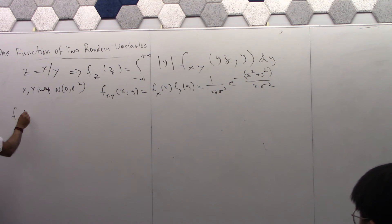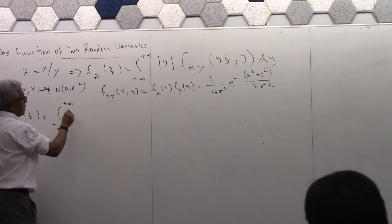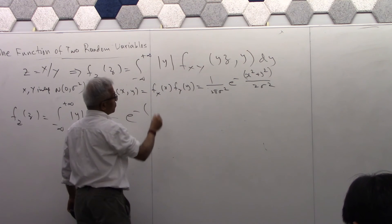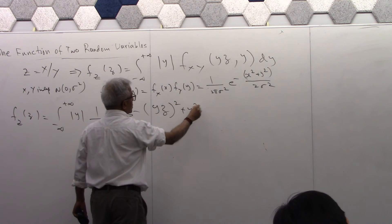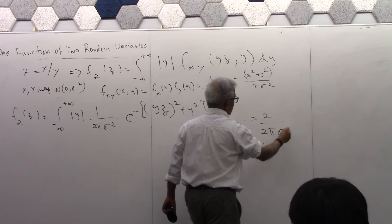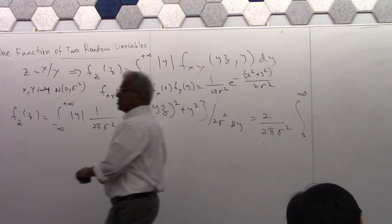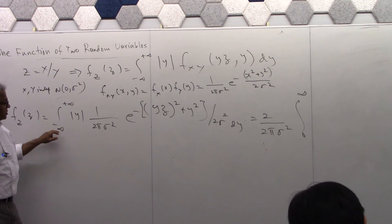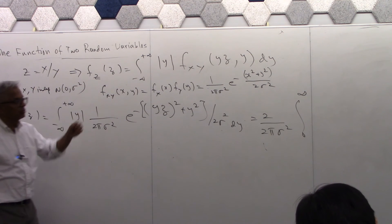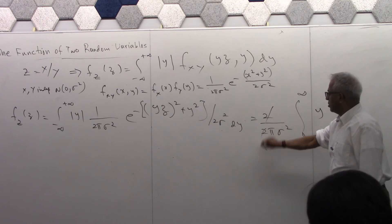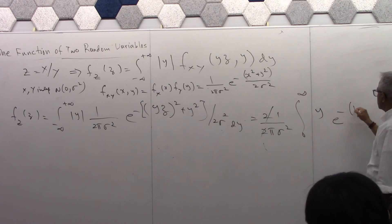So I plug this in here. fz(z) is minus infinity to plus infinity, absolute value of y, 1 over 2 pi sigma squared, e raised to minus yz squared plus y squared over 2 sigma squared. Look here, it's an even function of y. Because this is y squared, y squared, and absolute value of y. The integral will be 2 times integral from zero to infinity. Once it is that, then I don't need absolute value, because in this region y is positive. I pulled out the constants outside.